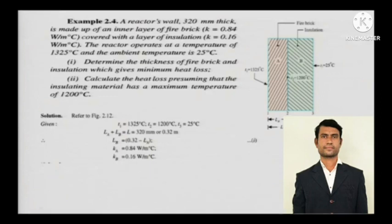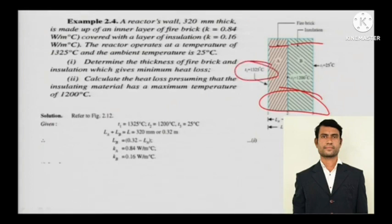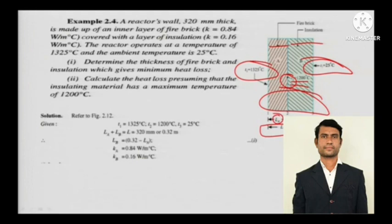You can see the two layers of the composite wall — one is the fire brick and one is the insulation. T1 is the inner temperature, T3 is the outer temperature, and T2 is the intermediate interface temperature. The insulation material maximum temperature is 1200 degree Celsius, so T2 equals 1200 degree Celsius. This is all given.